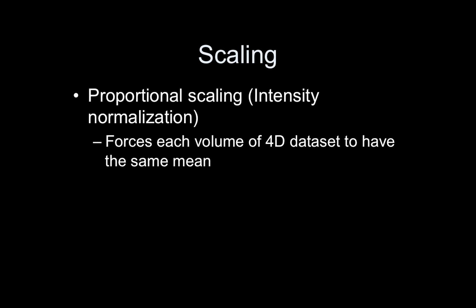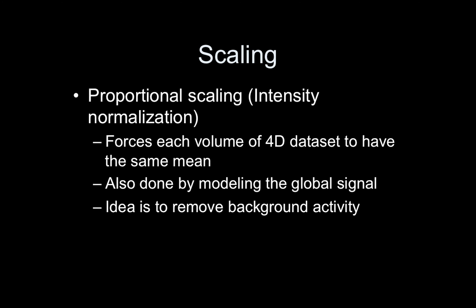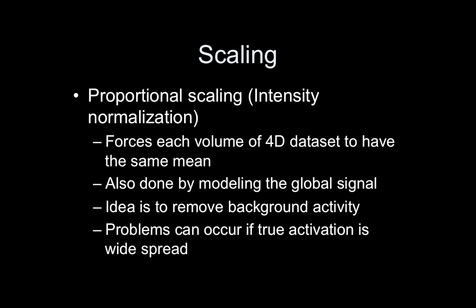The other type of scaling is proportional scaling, sometimes called intensity normalization. This is different because instead of scaling the entire 4D dataset at once, it scales each volume separately so that all time points have the same mean. If you have 200 time points — 200 3D volumes — it takes the mean over each volume and equates them. One way to do this is modeling the global mean signal, also known as global signal regression, which is a big deal in resting state data analysis. The idea is to remove background activity of no interest, but problems can occur if your true activation is actually widespread.